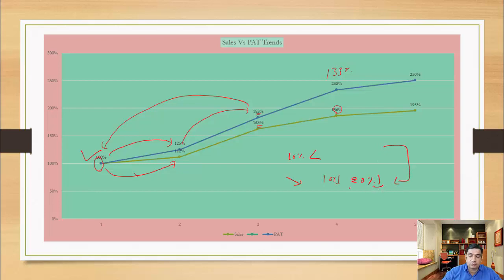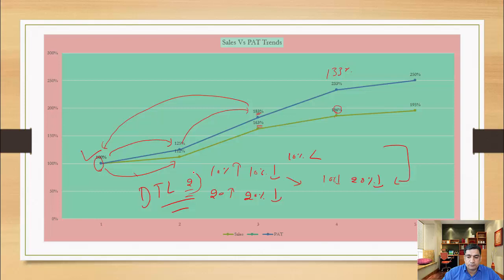The logic behind this could be the degree of operating leverage, degree of financial leverage, or in total the degree of total leverage. For example, if degree of total leverage is 2, it means if sales goes up by 10% profit goes up by 20%, and if sales goes down by 10% profit goes down by 20%. From this chart we can interpret that the degree of total leverage is more than one.